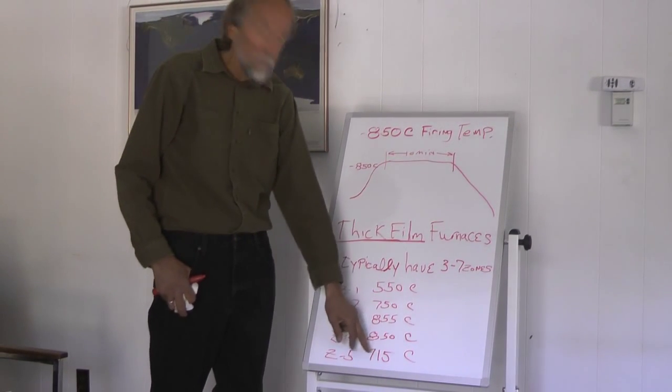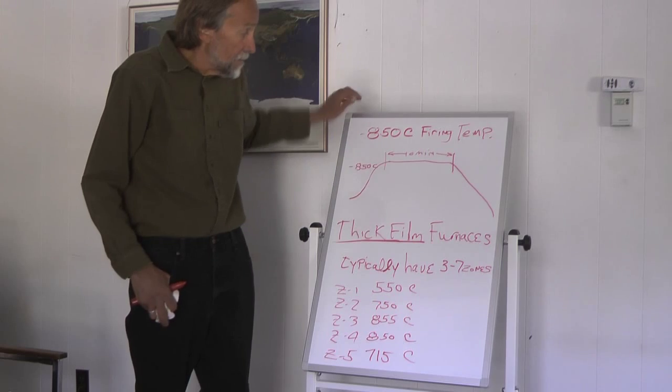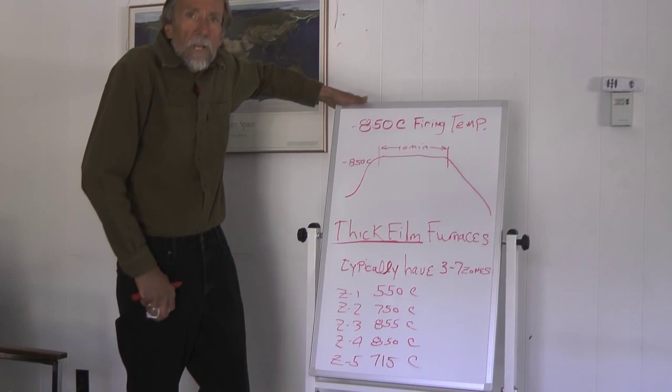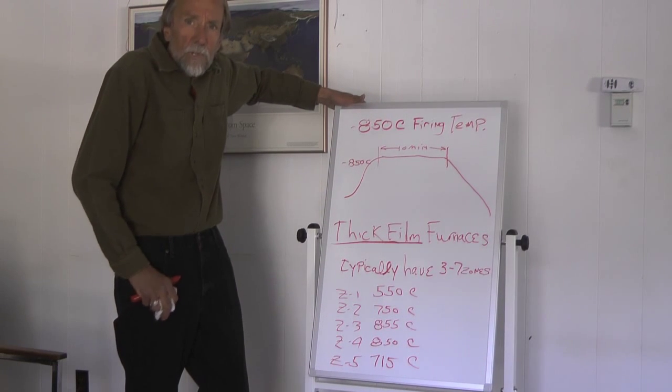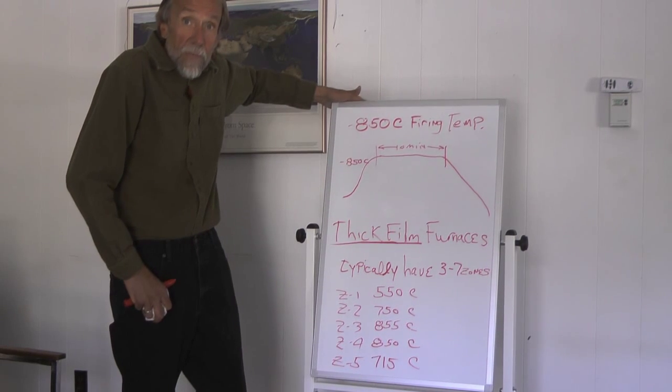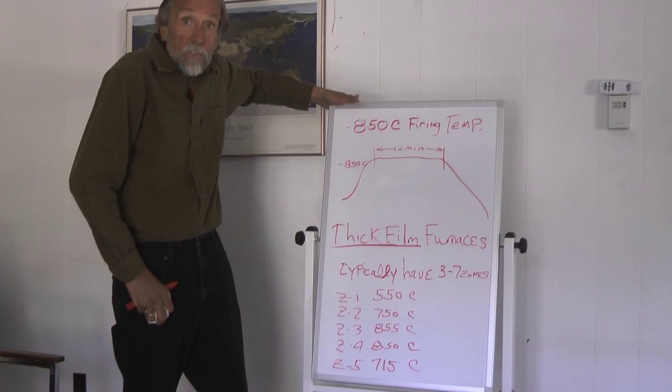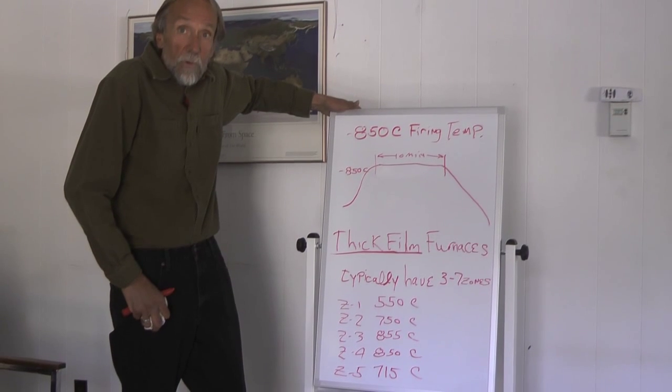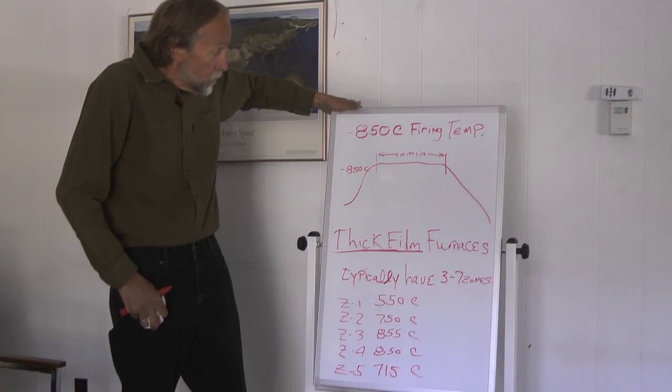And you'll find that right around 715 that zone 5 will start picking up maybe 5 or 10 percent power so it's in control. You want it to be consistent, that's the main thing. Don't let some external factor control your furnace for you, you want the controller to be what's in control.